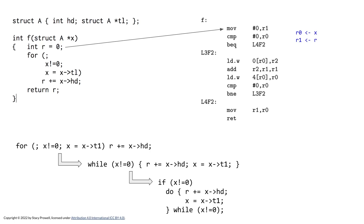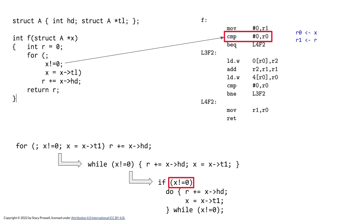We initialize r to 0, and in his little language we do that by moving a constant 0 into r1 — so r1 turns out to be our r. Then I check to see if x is not 0, and I have a compare there, which tells me x is going to be in r0. I kind of already knew that because this calling convention has arguments go in r0, r1, r2, etc., and the return value is in r0. So I now have r0 gets x, r1 gets r.